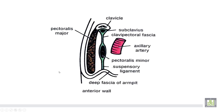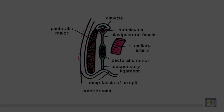This is a longitudinal section in the pectoral region. The skin and fascia are shown here. The pectoralis major muscle forms the first layer. The second layer is formed from above downwards: number one, the subclavius muscle; number two, the clavipectoral fascia; number three, the pectoralis minor. The fourth element, the continuation of the deep fascia, is the suspensory ligament of the axilla, forming the third layer.